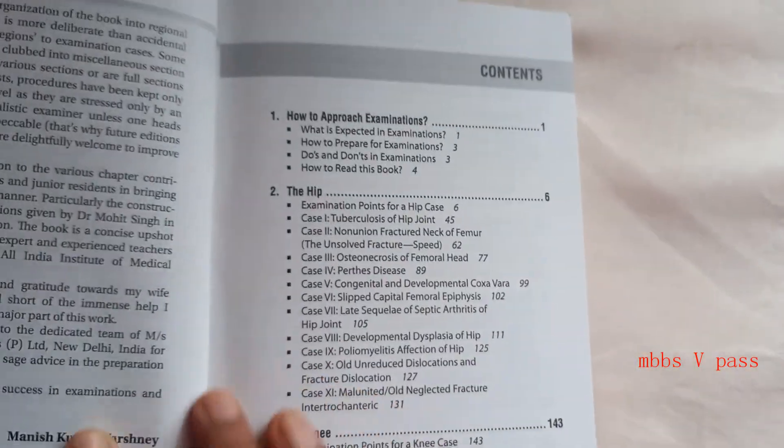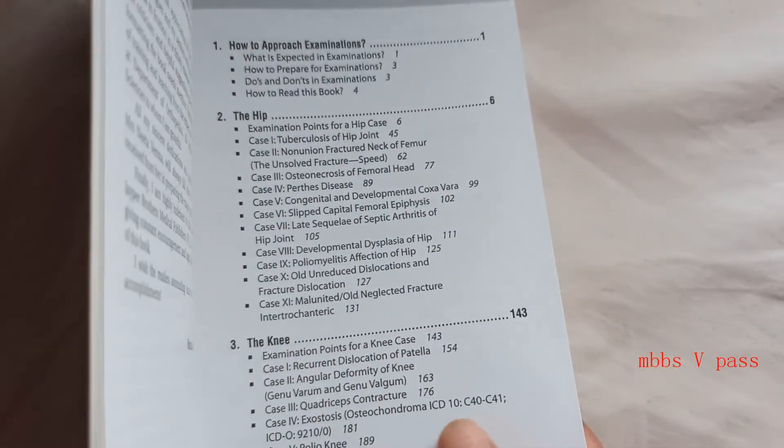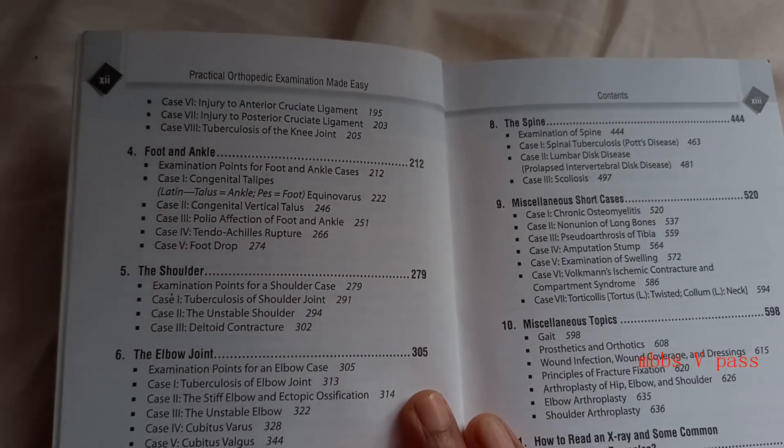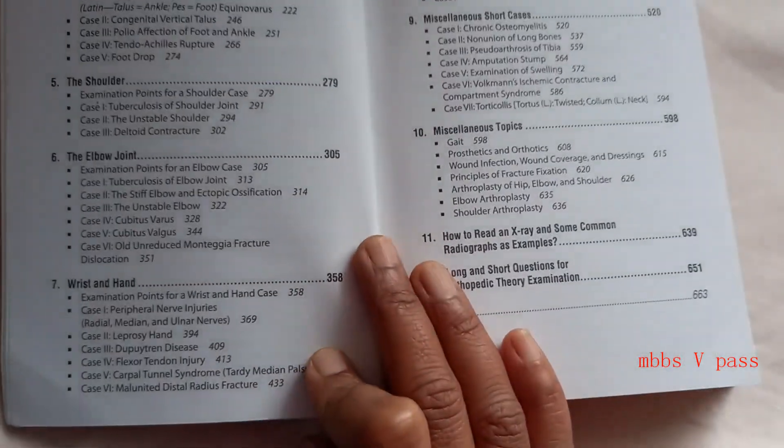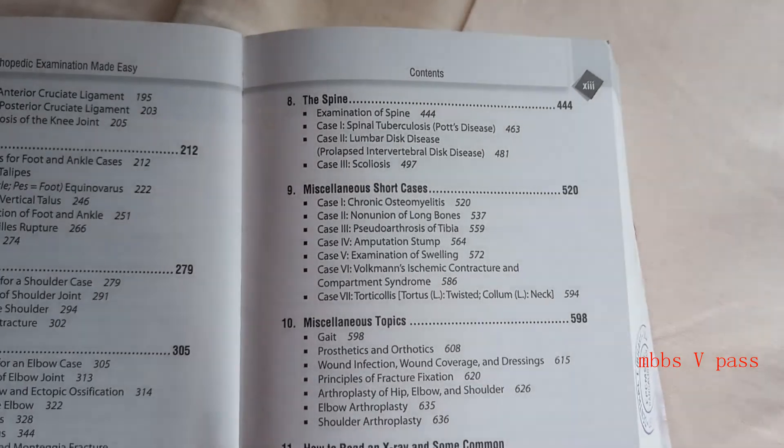Look at the contents: hip, knee, foot, ankle, shoulder, elbow joint, wrist, hand, spine.